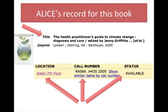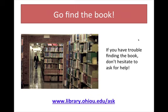If the status area says the book is available, that means it should be on the shelves. Use the call number and location information to go find the book. Call numbers can be confusing, and books aren't always where they should be, so don't hesitate to ask any library employee for help.